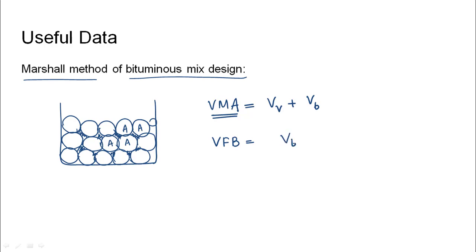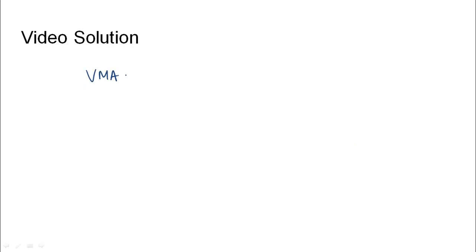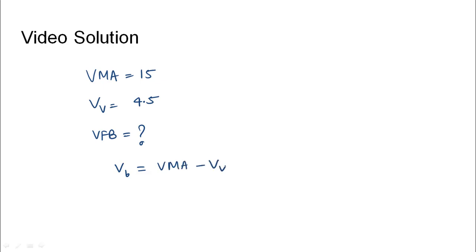If we want to find the percentage of voids filled with bitumen, that would be equal to VB divided by the total voids in the mineral aggregate, into 100. We have been given VMA as 15 and VV as 4.5. So firstly we need to find VB, which equals VMA minus VV — that is 15 minus 4.5, which gives 10.5.